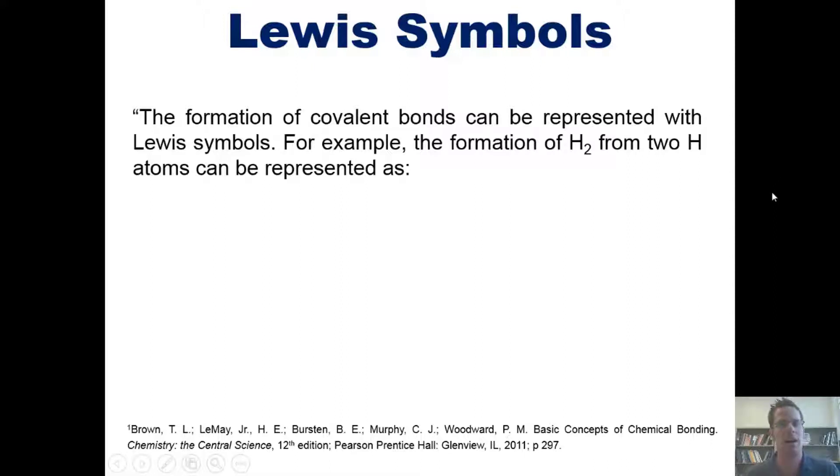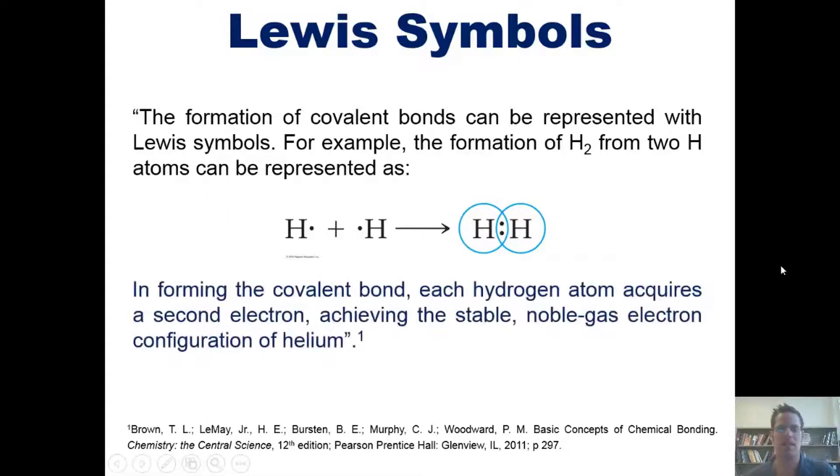For example, the formation of H2, which is a molecule of hydrogen, from two individual hydrogen atoms can be represented like this. If I have two individual hydrogen atoms, each with its individual single valence electron, when they go together, they basically snap those two electrons into each other's holes in a complementary fashion to form this molecule. This is H2, or a Lewis diagram of H2. So in forming the covalent bond, this bond between these two hydrogen atoms, each hydrogen atom acquires a second electron from its partner, which makes each hydrogen atom feel as if it's achieving the stable noble gas configuration of helium.